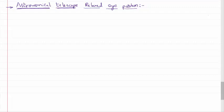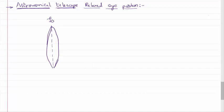Being the objects are very large but quite far from the telescope, we shall have an objective lens which shall have a higher field of view — that is, a higher focal length. That's why in the case of this astronomical telescope, the focal length of the objective lens is obviously very large. So let us consider this as the principal axis.